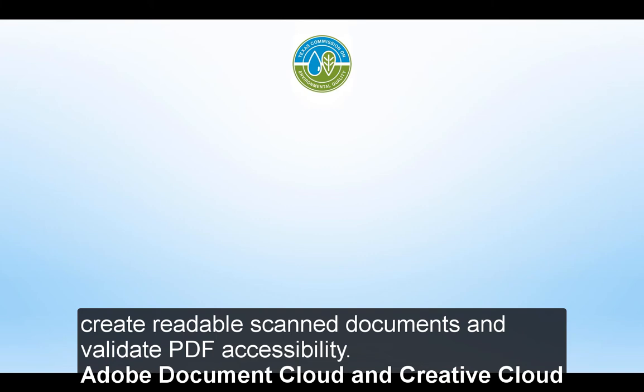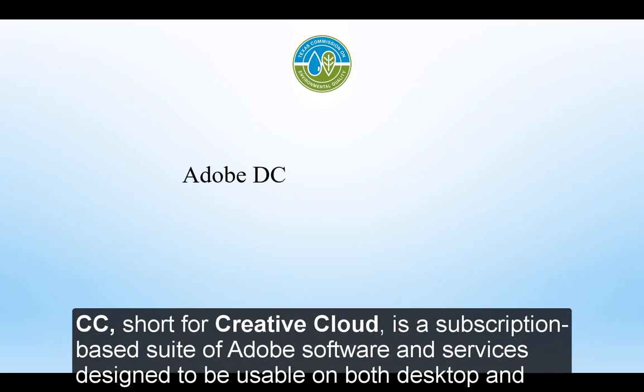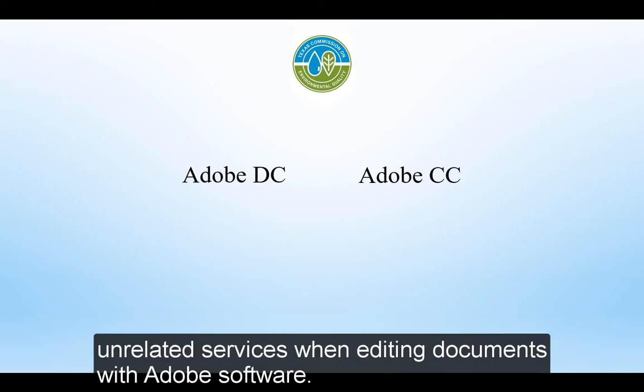Adobe DC, short for Document Cloud, is a cloud service where PDFs and other file types can be stored and sent to other users. Adobe CC, short for Creative Cloud, is a subscription-based suite of Adobe software and services designed to be usable on both desktop and mobile devices. Document Cloud and Creative Cloud are often used in conjunction with one another. They are both useful but unrelated services when editing documents with Adobe software.